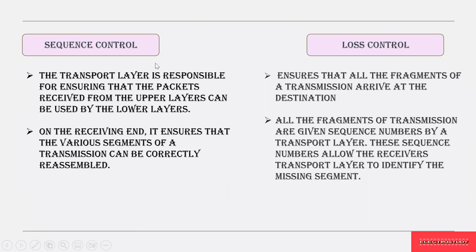Sequence control ensures that all the packets received from the upper layer — the application layer — can be used in all the lower layers such as the transport layer, network layer, data link layer, and physical layer. On the receiving end, it ensures that various segments of the transmission can be reassembled in the correct order as sent from the upper layer, maintaining the sequence of the packets.